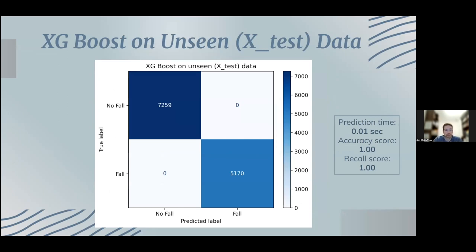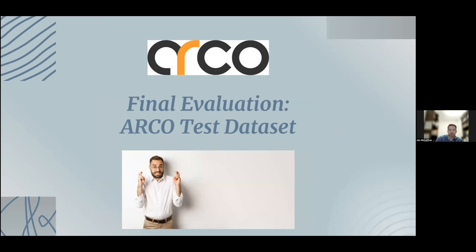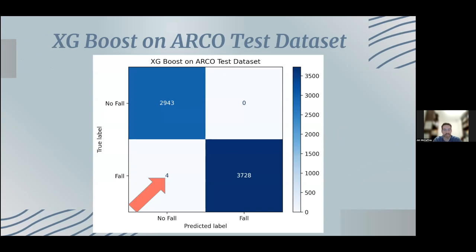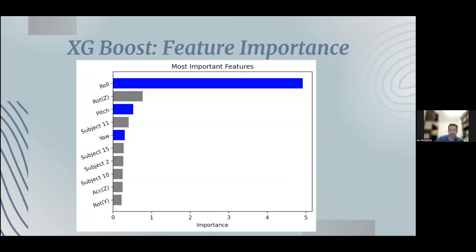On my reserved test data, the XGBoost model classified every activity correctly — zero false negatives — in 1/100th of a second. When I finally opened the ARCO test data set, it was missing the roll, pitch, and yaw features I mentioned earlier. Running my best model on that data unfortunately resulted in four false negatives — a 0.0006% error rate, which sounds fantastic, but that's four times the model failed to alert when a fall actually occurred. It turns out those three features are among the top five most important features for my model, so any real-time model using XGBoost must include those three sensor features.